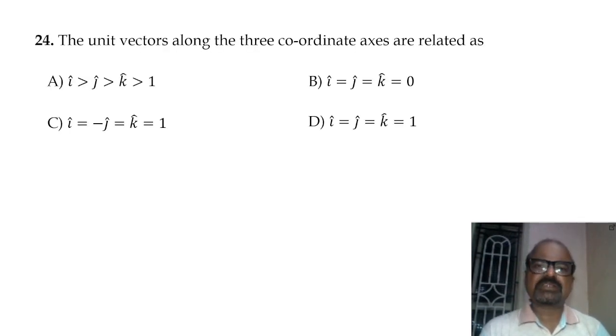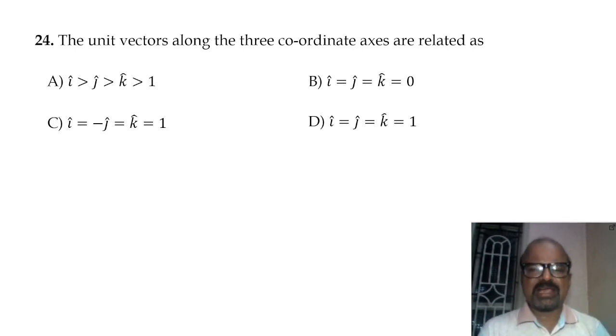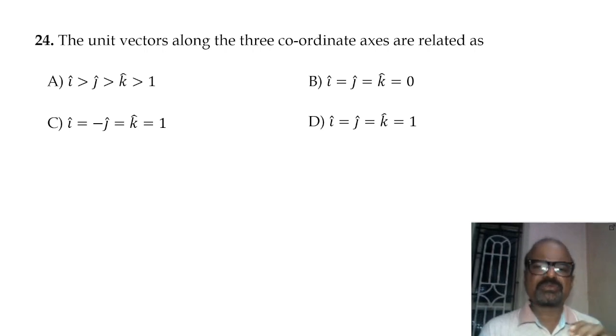The unit vectors along the three coordinate axes are related — they all have the same magnitude equal to 1, but different directions.